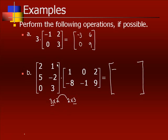What you're going to do is basically row 1 times column 1. So 2 times 1 is 2, and 1 times negative 8 is negative 8. Then you add the entries: 2 plus negative 8 gives negative 6.